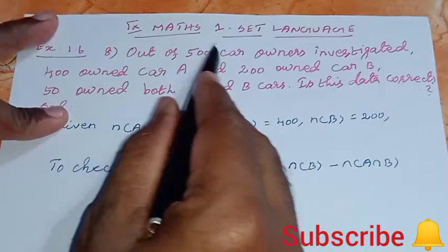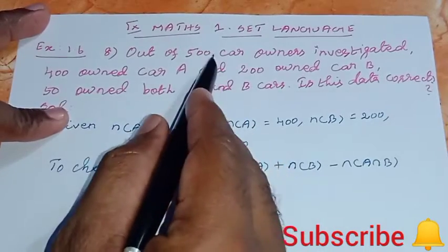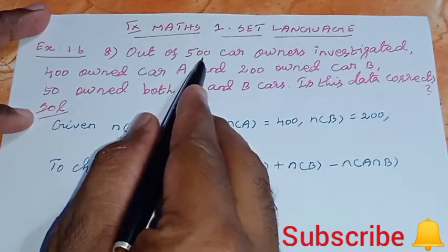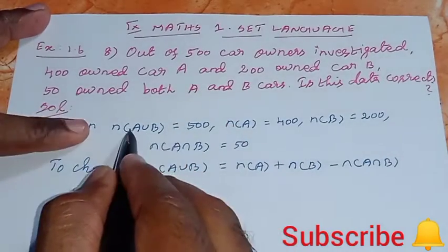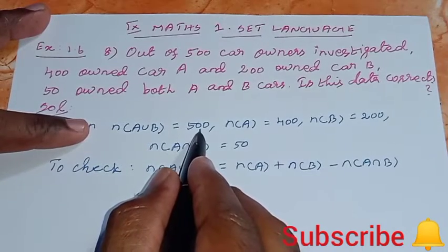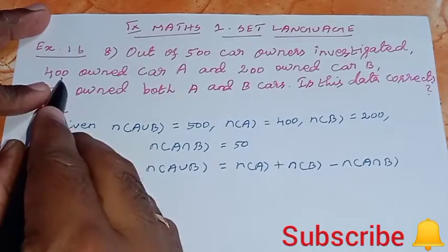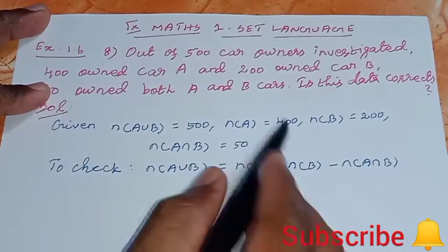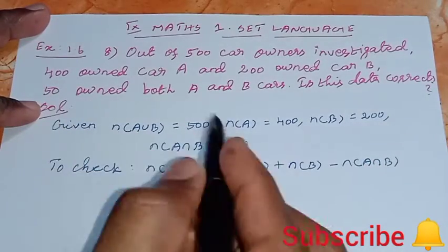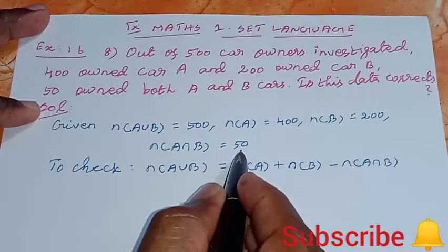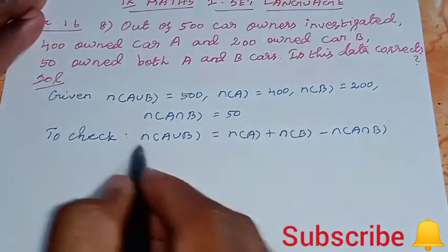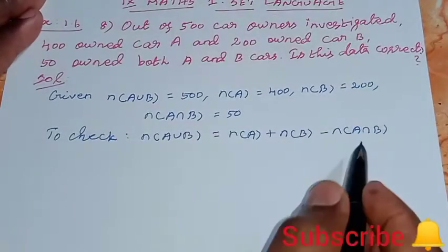Check the question. Out of 500 total, then union, that's the answer, n of A union B. A car and B car, 500. n of A is 400, n of B is 200. Both cars, use intersection, so intersection means 50. How to check the question? This is 2 sets, 2 cars, we will check this condition.